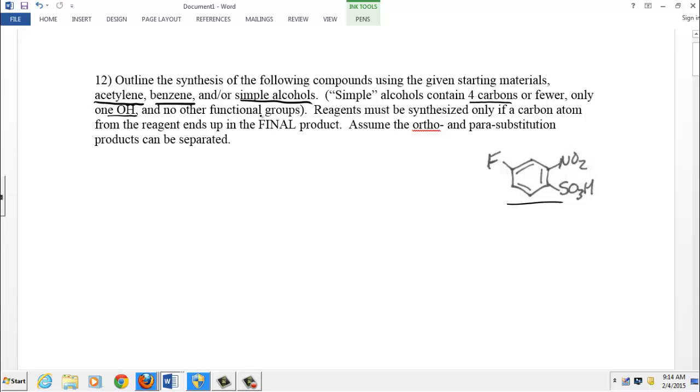That doesn't mean you can't use any other carbons for your reagents. It just means that any carbons that end up in your product have to ultimately be synthesized from those three categories. We need to make this molecule and it has a fluorine atom, a nitro group and a sulfonic acid group. I think the first thing I would do is just recall those reactions that put those three groups onto benzene.